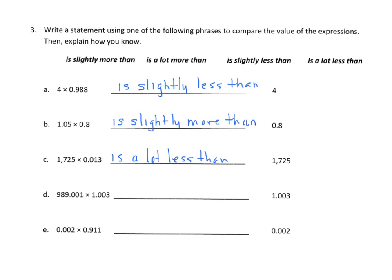The common number on both sides is 1 and 3 thousandths, so we look at the other factor. It's a lot greater than 1, so we choose is a lot more than. Finally, 2 thousandths appears on both sides. The other factor is 9,111 thousandths, which is less than 1 but pretty close to 1, so the answer is slightly less than.